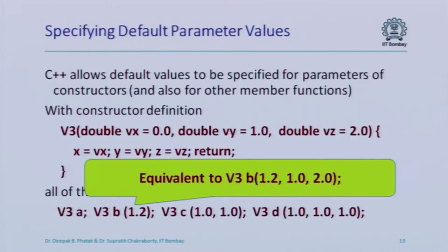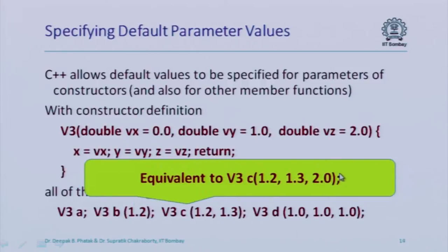If you specify just one parameter, the other two take their default values — equivalent to saying 1.2, 1.0, 2.0. If you specify two parameters, those go to the first and second, and the third gets its default — equivalent to 1.2, 1.3, 2.0. Default values work by providing them with equals and a value in the parameter list, and if the value of the parameter is not specified when calling the function, it takes the default value.